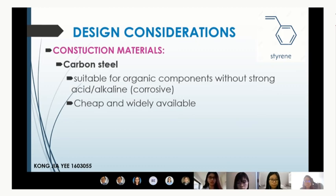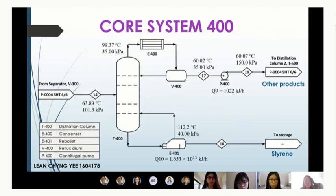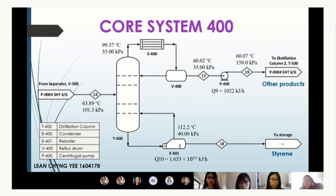Core systems 400 and 500 are separation systems similar to core system 300. Core system 400 consists mainly of a distillation column that separates the desired product styrene at the bottom outlet, with other products exiting the top. Distillation column 1 is operated under vacuum to reduce the boiling points of compounds, decreasing the workload of the condenser and reboiler. A pump increases the pressure of the bottom product to 150 kPa before it enters distillation column 2, which operates at normal conditions.